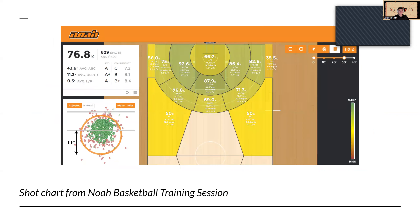Here's a shot chart from Noah Basketball as a player at practice. It shows the percentage of shots that were made, the degree of the arc, the depth within the goal when it was made, so a player can instantly improve on their shot making.